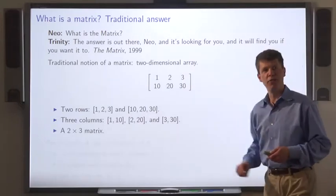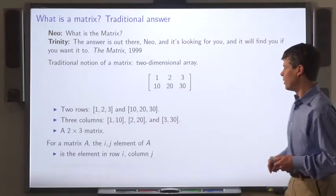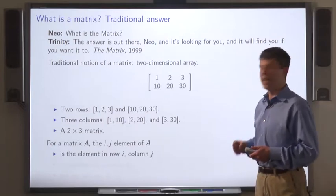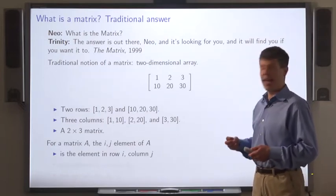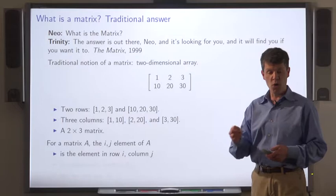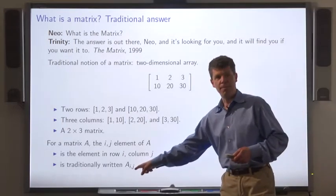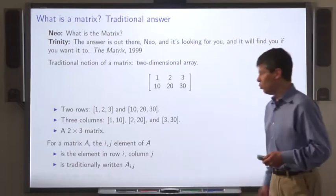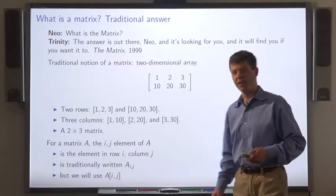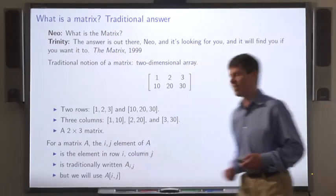And we call this a 2 by 3 matrix. For matrix A, the ij element of A refers to the element in row i, column j, and it's usually written A subscript ij.